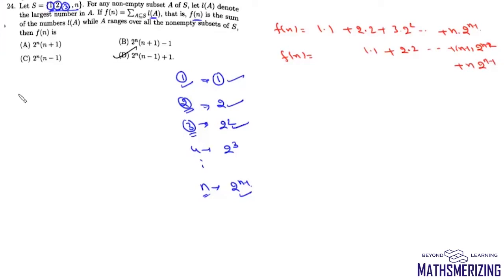When we multiply by 2, we'll get 1×2 + 2×2² + 3×2³ + ... + (N-1)×2^(N-1) + N×2^N.